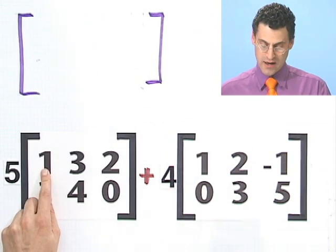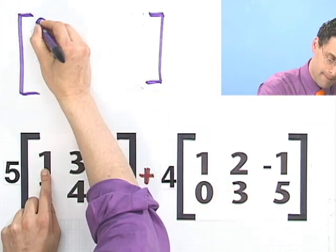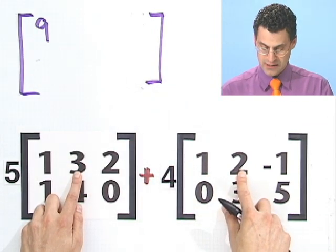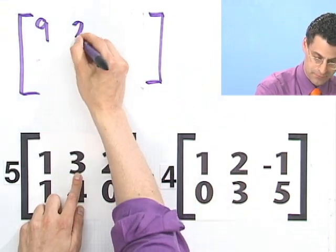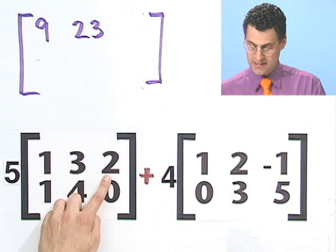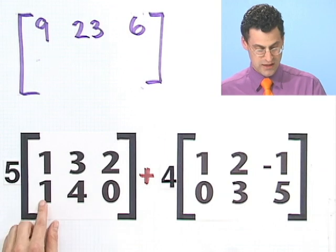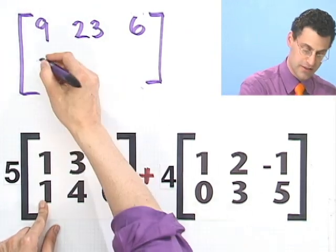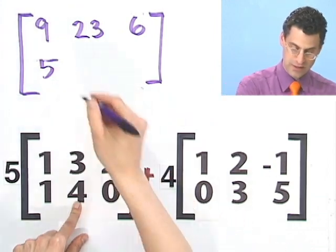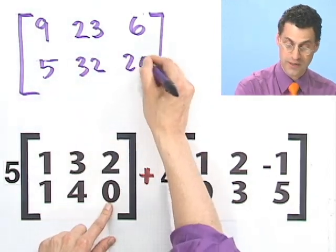So in this place, I'd have a 5 and a 4. And when I combine them, I see a 9. Here I see a 15 and 8, and so that would be a 23. Here I see a 10 and a minus 4, so that's a 6. Here I see a 5 and a 0, so that's just 5. Here I see a 20 and a 12, so that's a 32. And here I see a 0 and a 20, and so I get a 20.